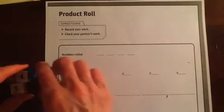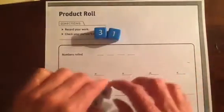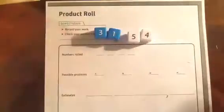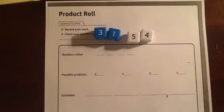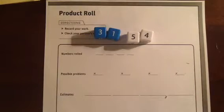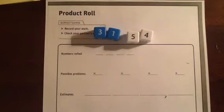This game is called Product Roll, from Do the Math Multiplication C. To play, you'll need number cubes: two zero through five cubes and two four through nine cubes. Split your students into pairs, and each student gets workspace page 43.